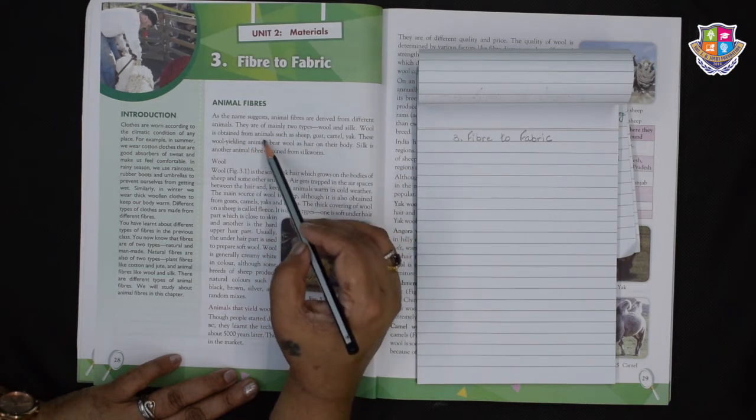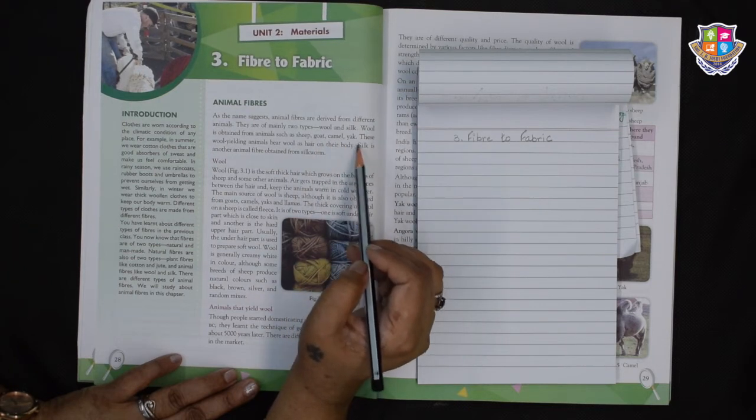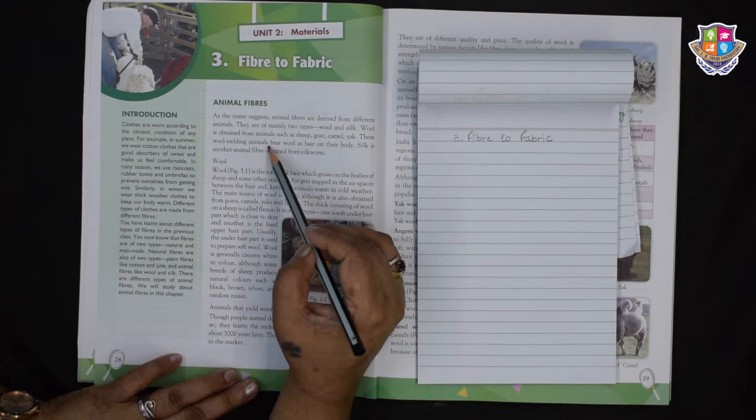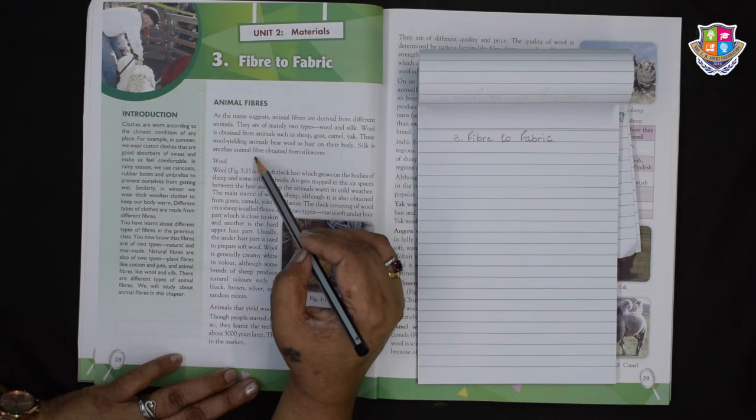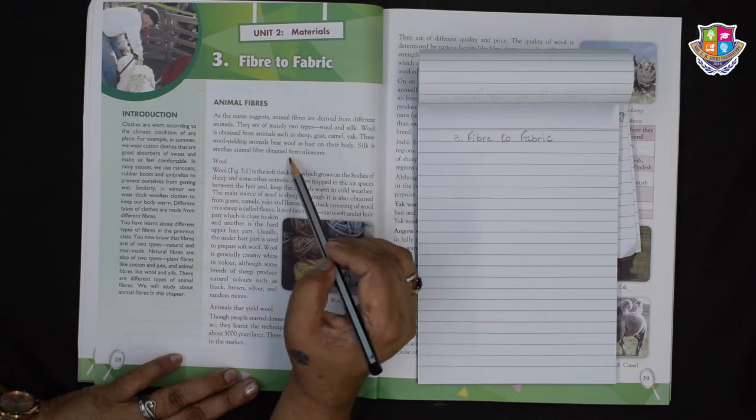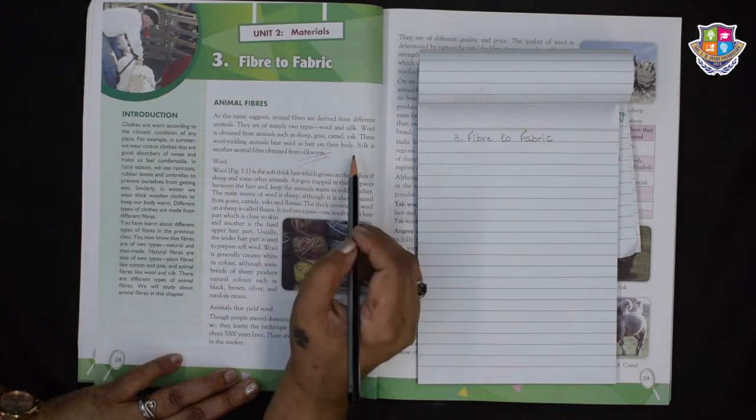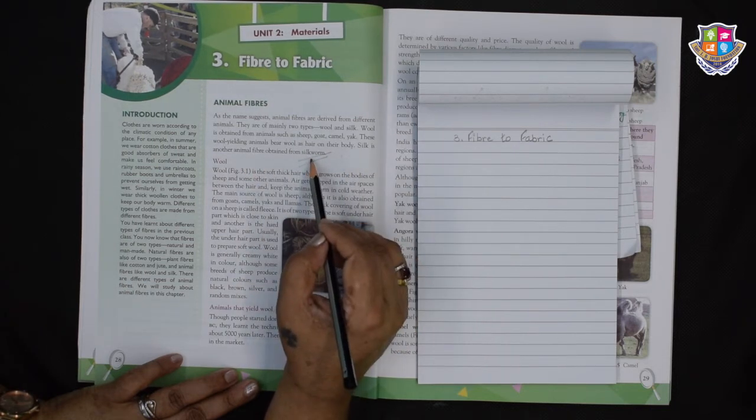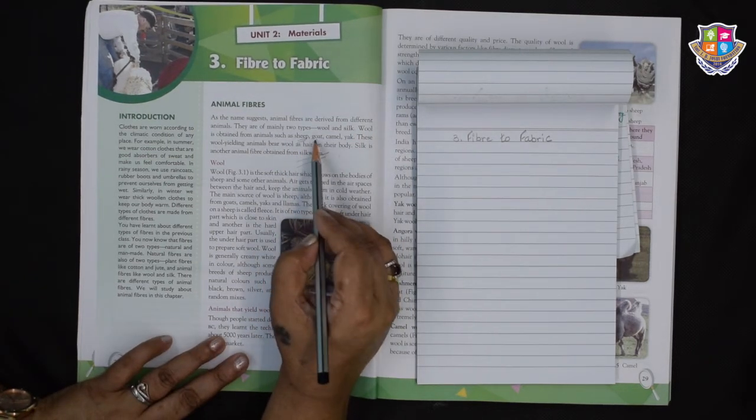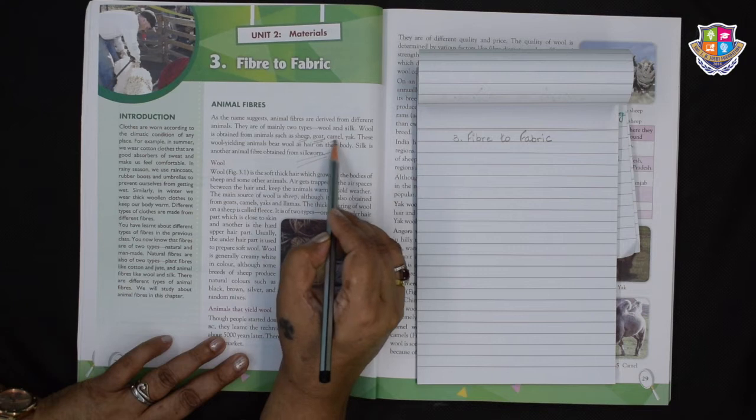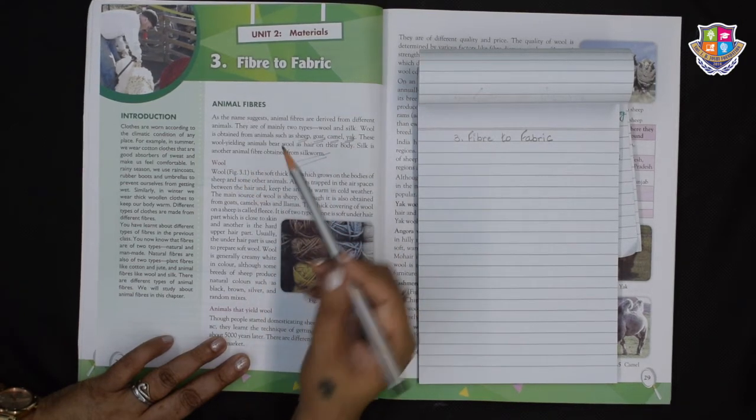There are different types of animal fibres. We will study about the animal fibres in this chapter. As the name suggests, animal fibres are derived from different animals. They are of mainly two types: wool and silk. Wool is obtained from animals such as sheep, goat, camel, and yak. These wool yielding animals bear wool as hair on their body.